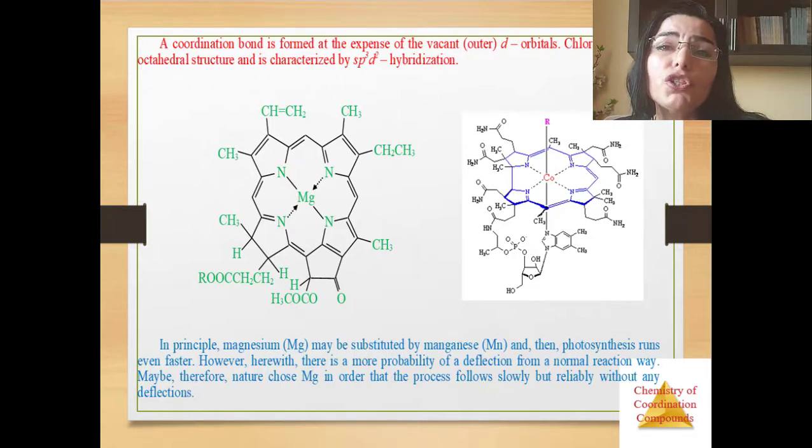It having a large charge and small radius possesses a high polarizing effect. A coordination bond is formed at the expense of the vacant outer d orbitals. Chlorophyll has an octahedral structure and characterized by SP3D2 hybridization.